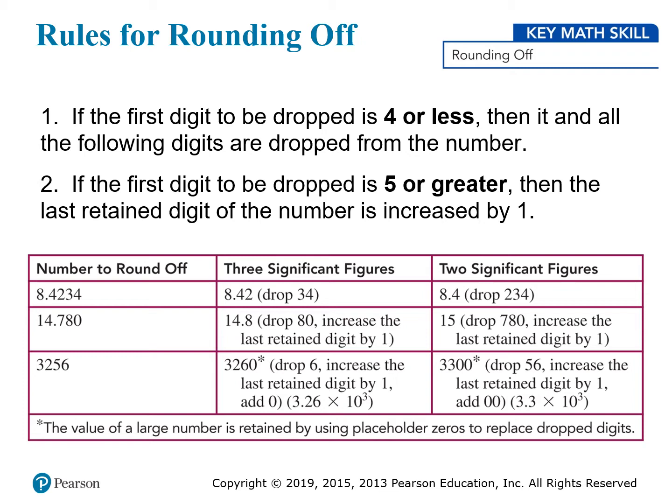You can see some examples here in this chart. The first column has the numbers we need to round. In the second column, we're going to round them to 3 significant figures, and in the third column, we'll round to 2 significant figures. The first example is the number 8.4234. To round it to 3 significant figures, we keep the first 3 digits from the left: the 8, the 4, and the 2. Then we look at the next digit and we see that it's a 3. Since that's less than 5, we can just drop it along with the rest of the digits, and we end up with 8.42. If we want to round it to only 2 digits, we just keep the 8 and the 4, and since the next digit is a 2, we again round down by dropping the remaining digits, leaving us with 8.4.